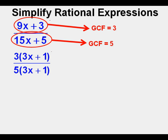Here is the expression with numerator and denominator factored: 3 times quantity 3x plus 1 over 5 times quantity 3x plus 1. Quantity 3x plus 1 over quantity 3x plus 1 cancel to equal 1, so our simplified expression is 3 over 5, or three-fifths. That's what we look for in simplifying — a significantly simpler expression. There is a discontinuity in the original expression when x is negative one-third where the expression is undefined, but exploring that further is beyond the scope of this lesson.